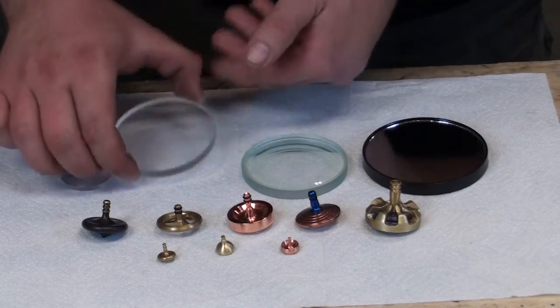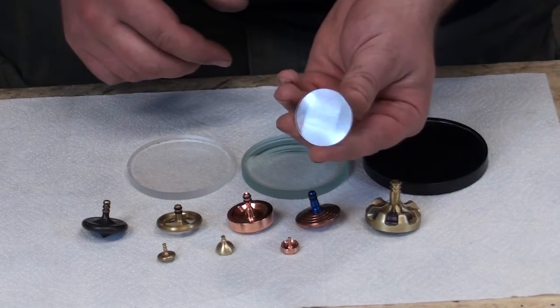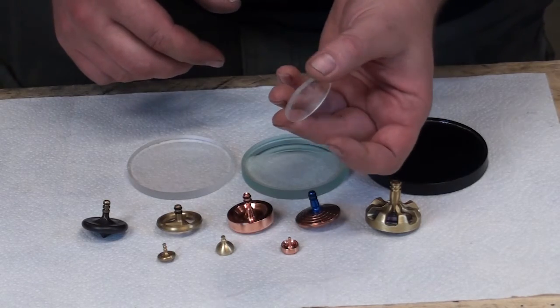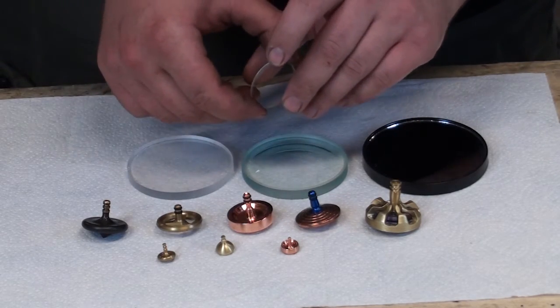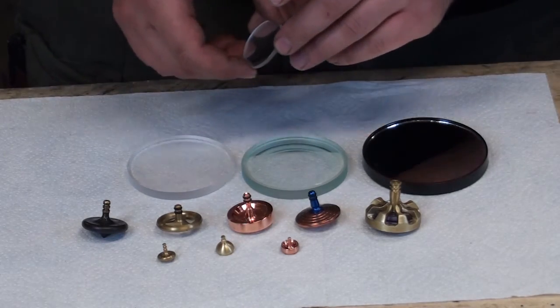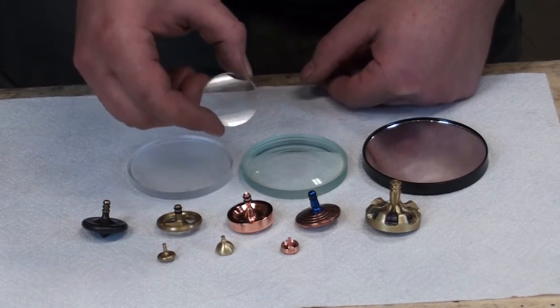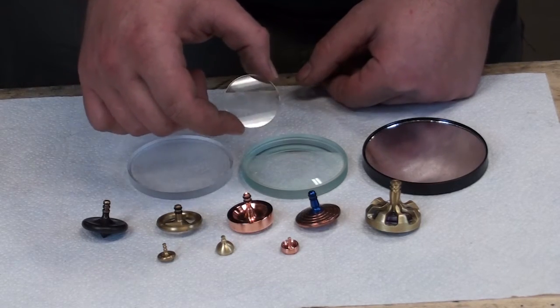Here we have the 38mm Sapphire lens with their Kicker profile that's designed to increase spin time and help the top stay on the lens so you can, even on this 38mm, you can rip it pretty good.